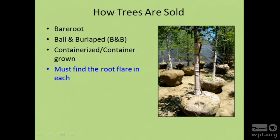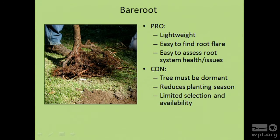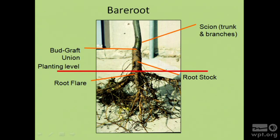Trees are sold in three different ways: bare root, balled and burlapped as shown in the picture, or in a container. In each situation you need to find the root flare. The easiest is the bare root because the roots are bare, so you can easily identify the root flare and check for any broken roots. It's very light and easy to carry. However, bare root trees are typically only available early in the spring and need to be planted while still dormant, and variety selection is usually limited.